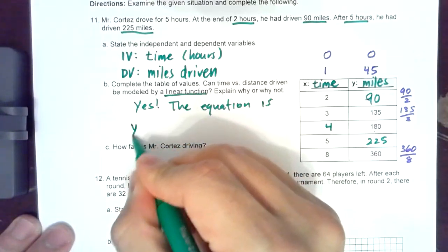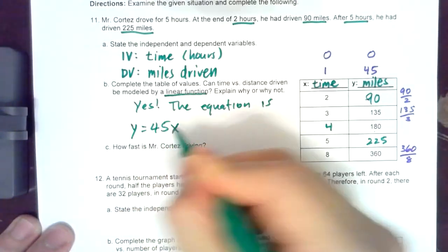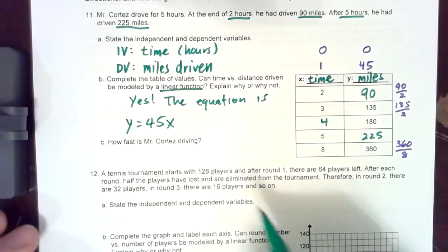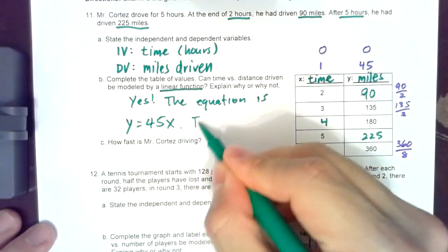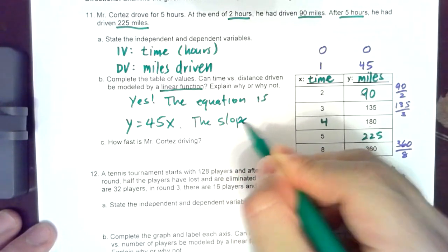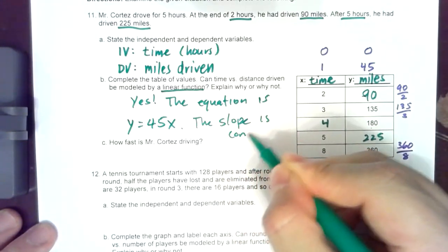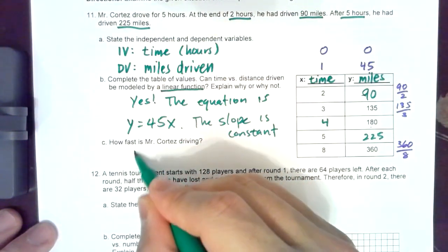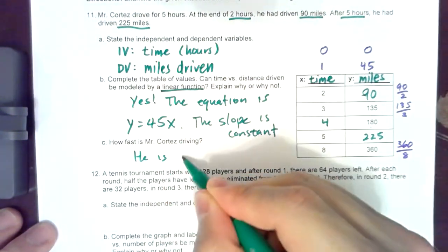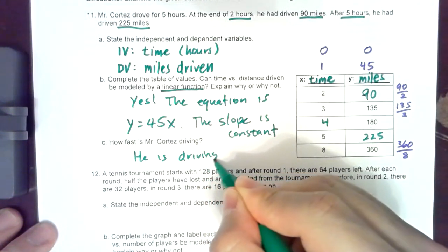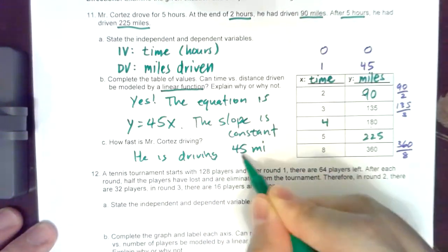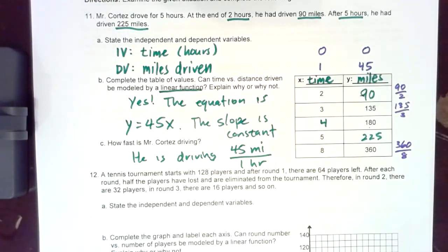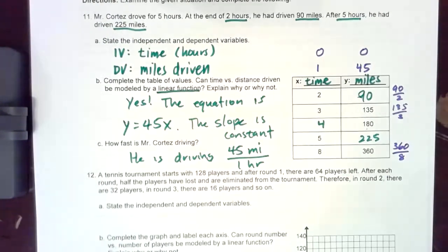The equation is y equals 45x. The slope is constant, that's why we know we can write an equation. How fast is Mr. Cortez driving? He is driving 45 miles per one hour.